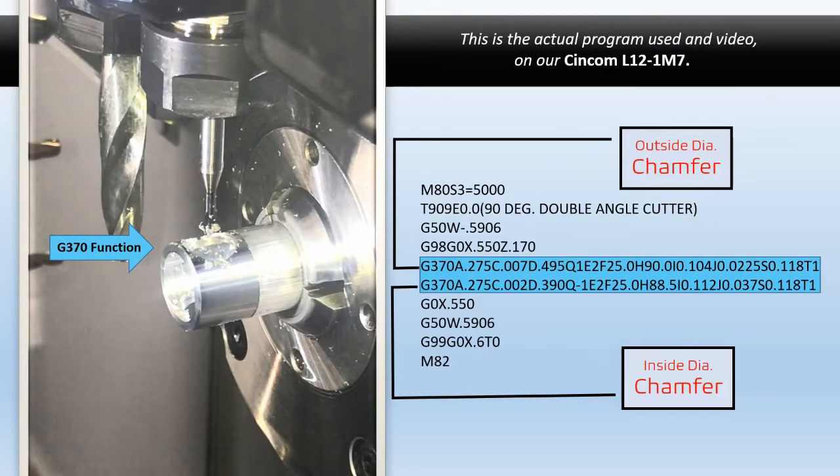As you can see that happened pretty quickly—a simple OD drill and a chamfer ID and OD. This is the actual code we use to make this specific part. The top line is for the outside and the bottom G370 is for the inside of the chamfer. We're going to go over in much more detail as to what these arguments mean in this code.